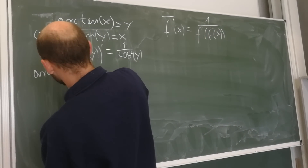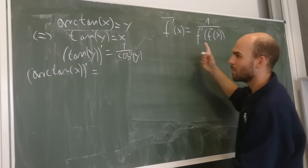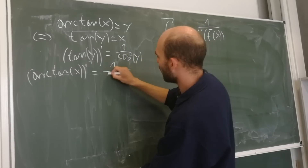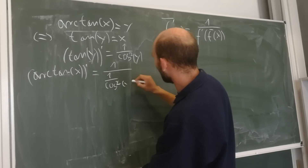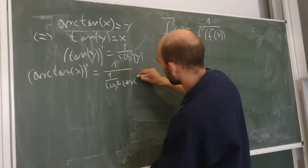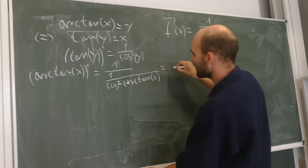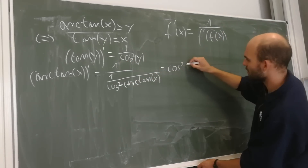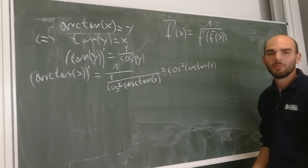The derivative of arctan(x) equals 1 divided by (1 over cosine squared of the inverse function), so of tangent of arctan(x). We can rewrite this as cosine squared of arctan(x), since we have two reciprocals.